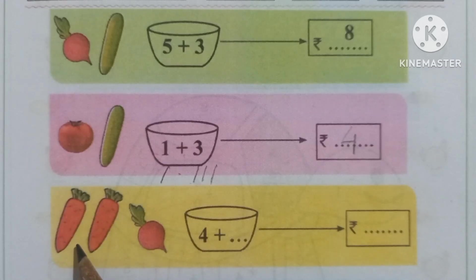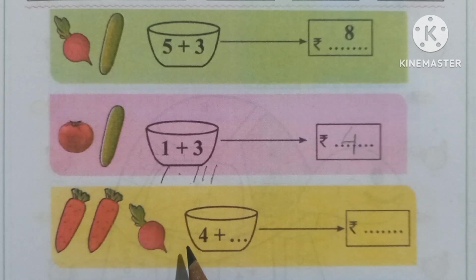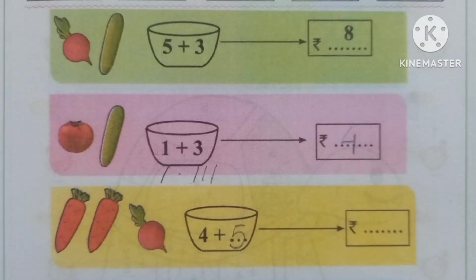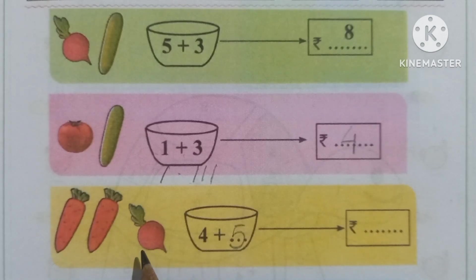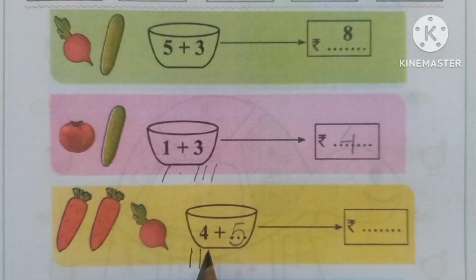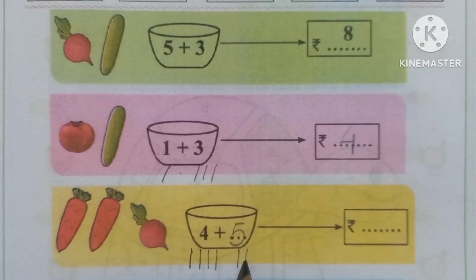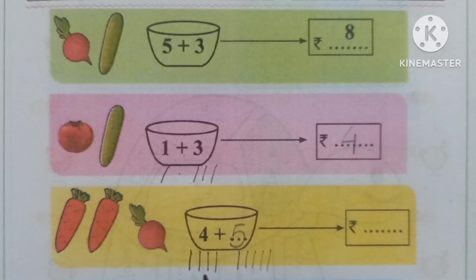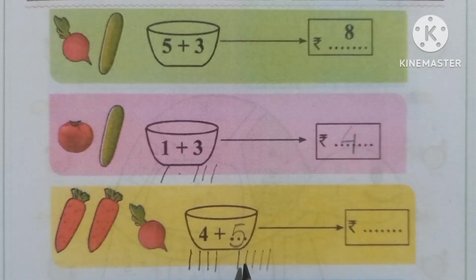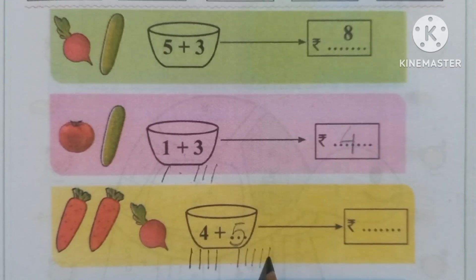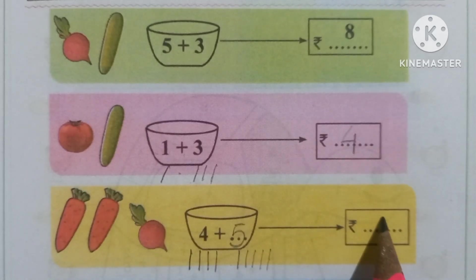Now, here are 2 radishes and 1 beetroot. The price of 2 radishes is 4 rupees, plus the price of 1 beetroot is 5 rupees. Total price is 4 plus 5. Drawing 4 tally lines for 4 rupees and 5 tally lines for 5 rupees, total lines counted are 1 through 9. The price of this salad is 9 rupees.